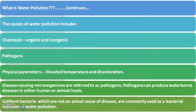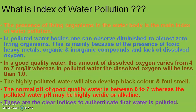Coliform bacteria are not actually the cause of disease but are commonly used as a bacterial indicator of water pollution. We can identify whether water is polluted or not just by detecting the presence of coliform bacteria in a water sample. That is why coliform organisms are also called the index of water pollution — their presence in water indicates that the water is polluted.